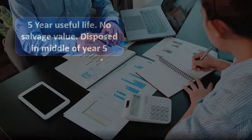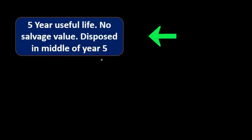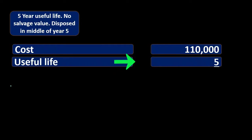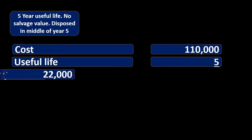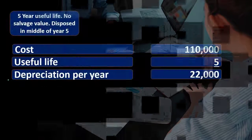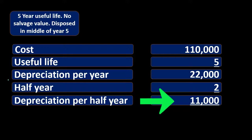In our case, adjusting entries are recorded each year at the end of the year. Since we are disposing of the equipment in the middle of year five — before it is totally depreciated — we need to record half a year of depreciation. The cost of the equipment is $110,000 divided by a five-year useful life using straight-line with no salvage value, giving us $22,000 depreciation per year. Dividing by two for the half year gives us $11,000 of depreciation to record.